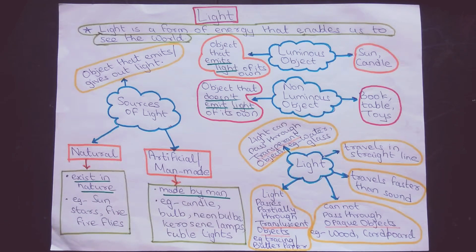These objects are already present in nature. They are made by God, already present, and we cannot make them. So, these are called the natural sources of light.